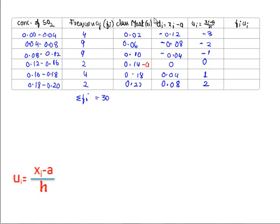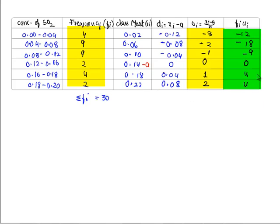As we have reduced xi to ui, we shall find the product of fi and ui. Here we get 4 into -3, it's -12. Here -18, -9, 0, 4, and 4. And if we consider the sum of the total values, we get Σfi*ui is equal to -31.